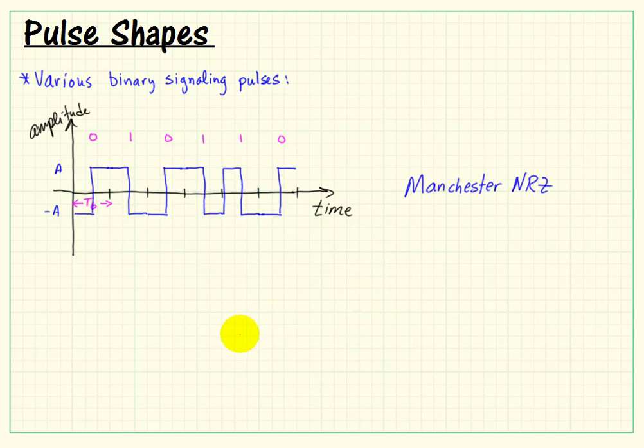One other pulse style is called the Manchester non-return to zero. If we consider this particular portion of the signal during the bit interval where we are sending a one, we see that the waveform is first at a positive value and then at a negative value.